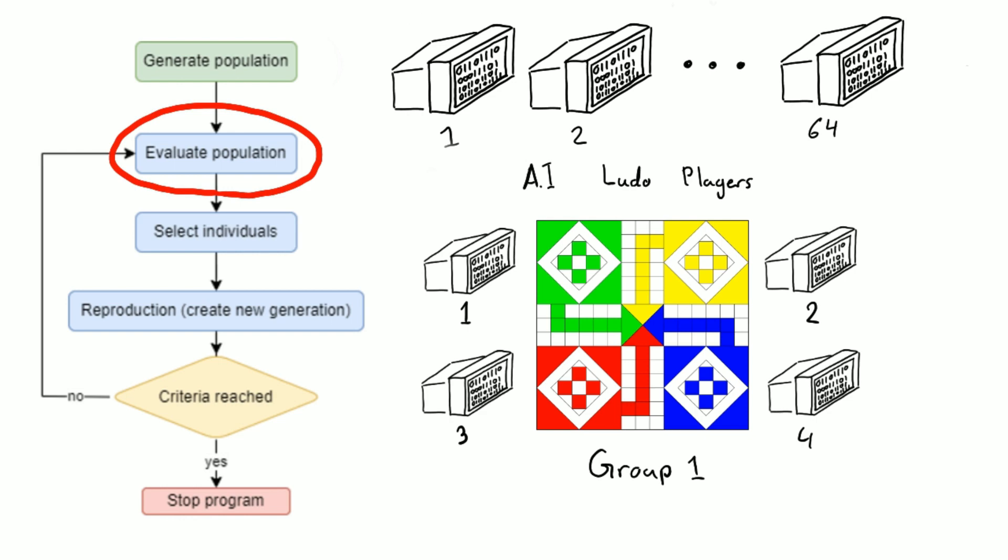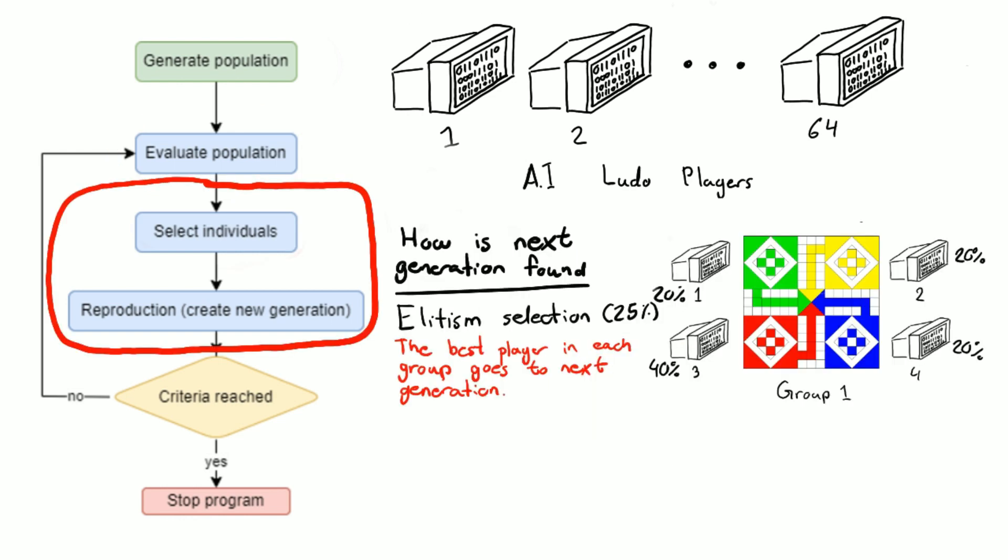Next up we need to select the individuals to go on, and I do this in a couple of different ways. One of them is elision selection. I take the best player that we have seen and make that one fill up 25% of the new children that are going to be created, a copy of that one.